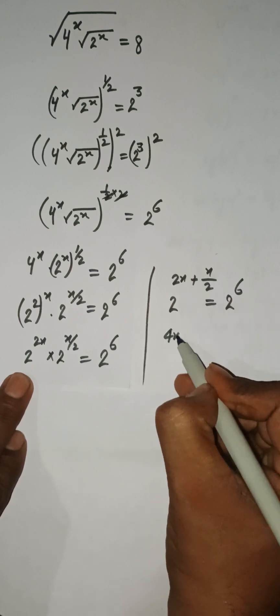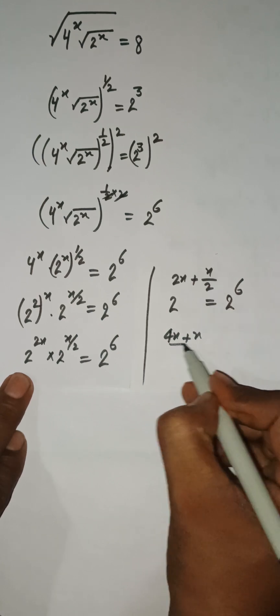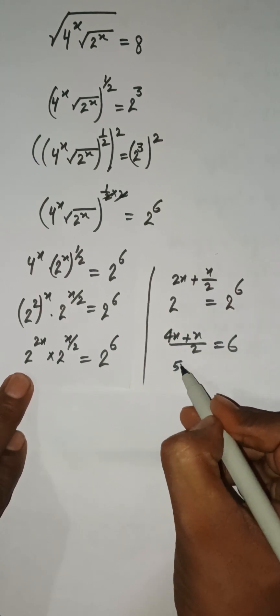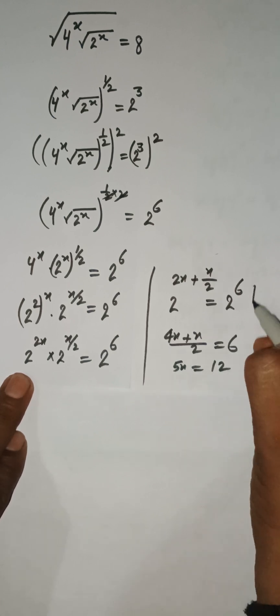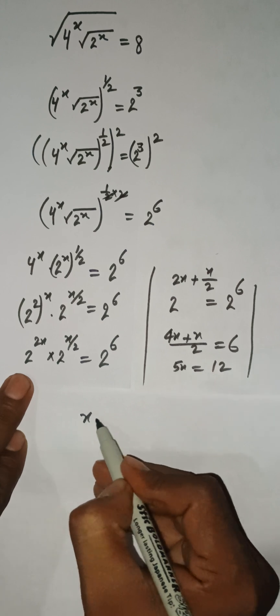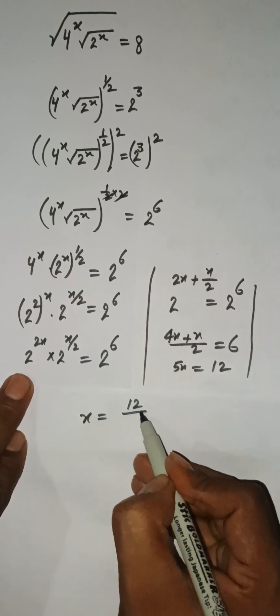The bases are same, so their exponents can be equated. Here we have 2x plus x by 2 equals 6. So we have 3x equals 2 times 6, which is 12. Finally we have x equals 12 upon 5.